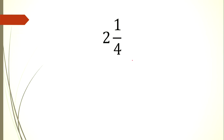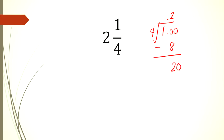We also have a mixed number: 2 and 1/4. Since 2 is already a whole number, it will be written on the left side of the decimal point. We just need to convert 1/4 to a decimal. 1 divided by 4 cannot be done, so we add a decimal and a zero. 10 divided by 4 is 2; 2 times 4 is 8; 10 minus 8 is 2. Add zero: 20 divided by 4 is 5; 5 times 4 is 20. The result for 1/4 is 0.25, so the full answer is 2.25.